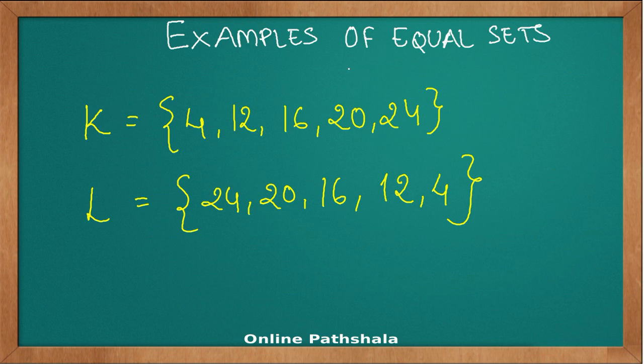Let us look at examples of equal sets. Let's say that we have a set K which has these numbers 4, 12, 16, 20, and 24. You have another set L which has 24, 20, 16, 12, and 4.